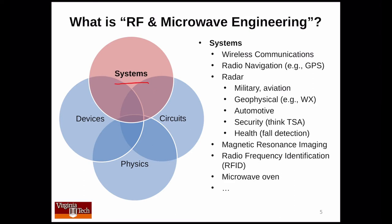If I just think about systems, here are some things that come to mind. I mentioned wireless communications, GPS, and radar. Under radar, we have military and aviation radar, geophysical radar (weather radar), automotive radar, which is becoming increasingly common, security radar — such as the screening systems you walk through at a TSA checkpoint in an airport — and now radars for health applications. For example, there are radar systems being designed for nursing homes to detect when a resident has fallen. I also mentioned MRI and RFID. Yet another system you might not think of is a microwave oven, which, as indicated in the name, is obviously an RF and microwave system.